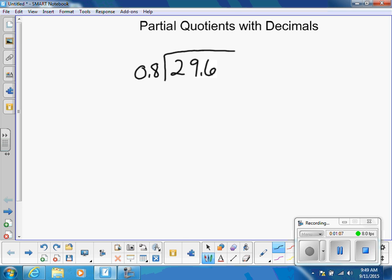I know that one group of 8 tenths is 8 tenths. And I also know that 10 groups of 8 tenths would be 8. So these are facts that we know, or easy facts that we know. Two groups of 8 tenths, think about that as doubling. Doubling 8 tenths would be 1 and 6 tenths.